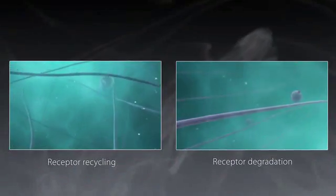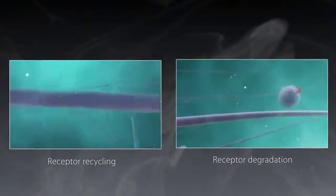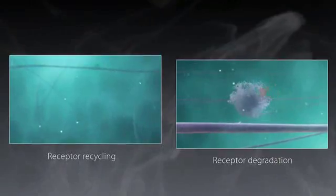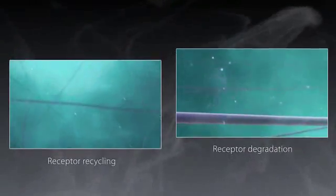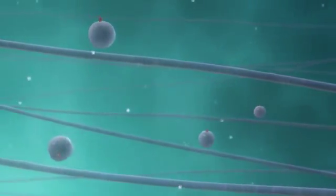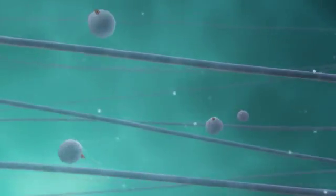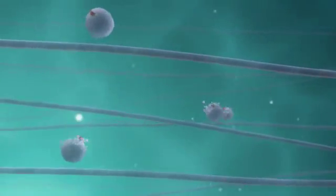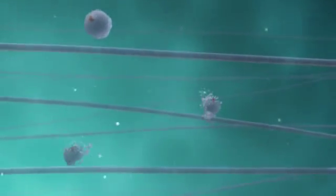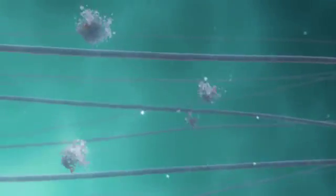And thus, a delicate equilibrium exists between the recycling of the internalized receptors and their degradation. During the development of opioid tolerance, there seems to be the reversal of this trend, so that more receptors are degraded than recycled. This phenomenon is known as receptor downregulation.